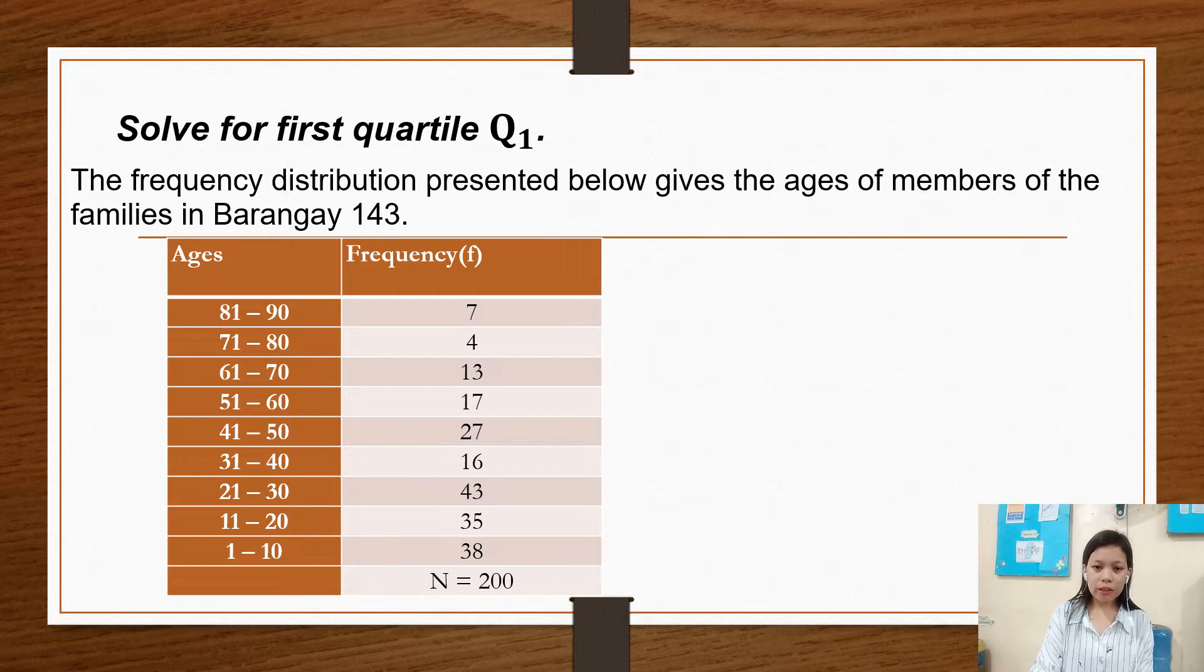So here, the ages is 81 to 90, 71 to 80, 61 to 70, 51 to 60, 41 to 50, 31 to 40, 21 to 30, 11 to 20, and 1 to 10, which are the ages or range.